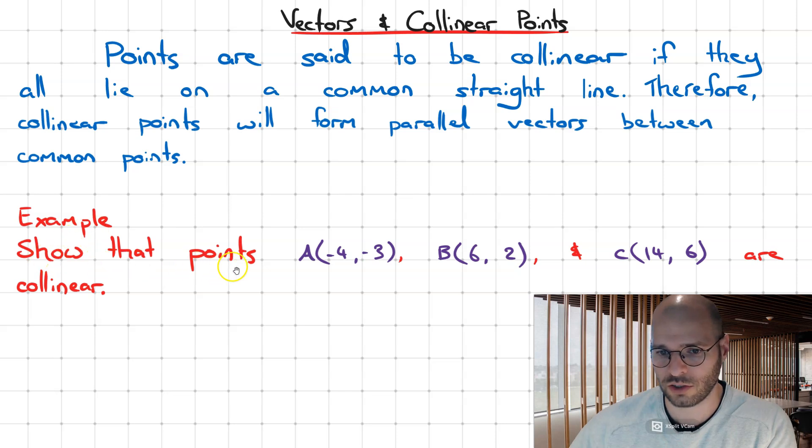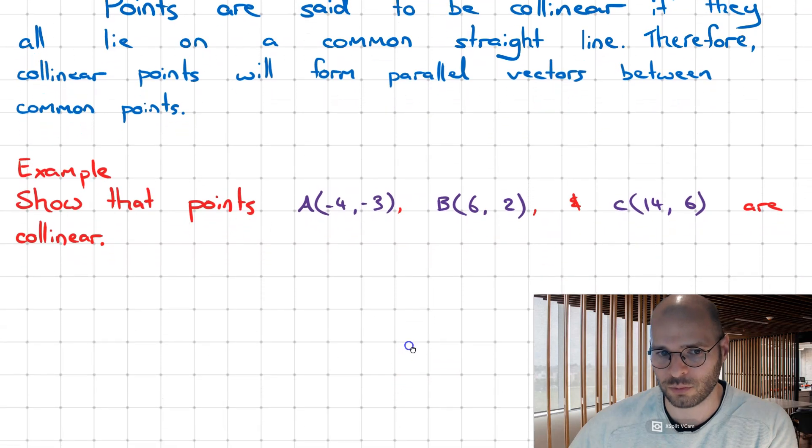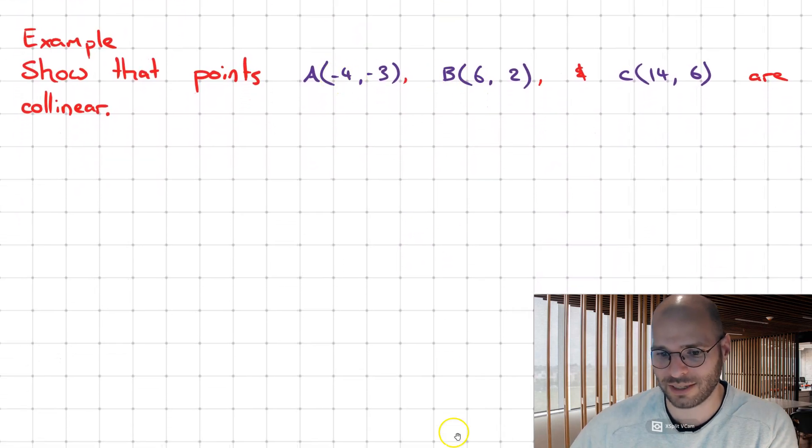Example 1: Show that the points A, B and C are collinear. Now observing what this might look like, suppose we have the points A, B and C.